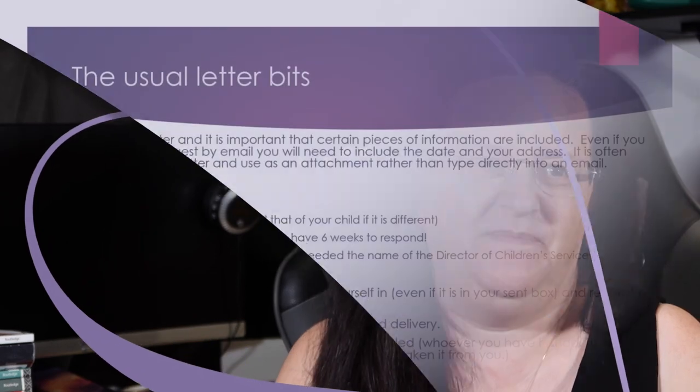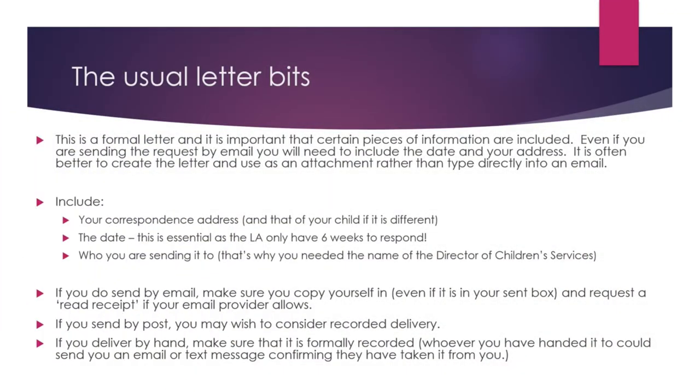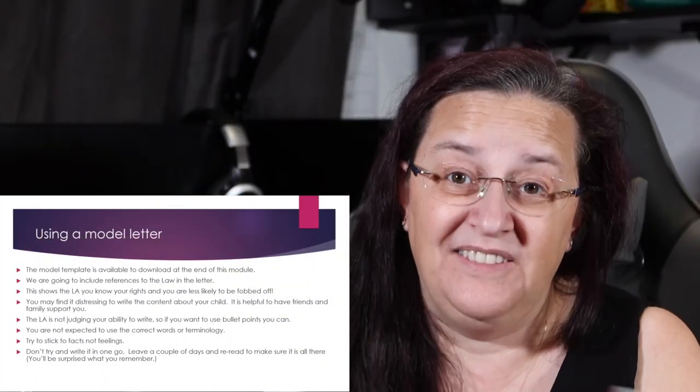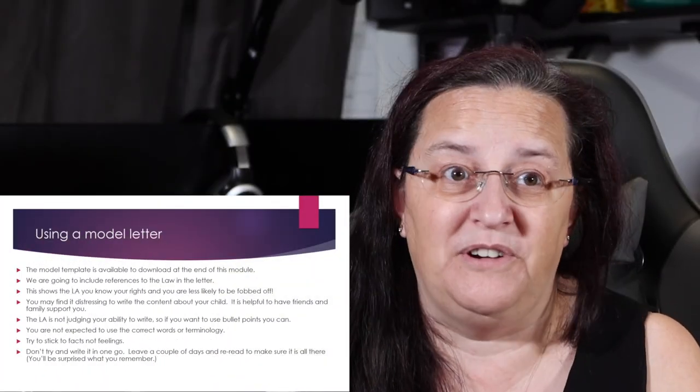When you come back to it and reread it, you'll realise you've missed something, or didn't explain it very well and now have a good example to add in. So if we're sending a letter, it's a formal letter and we need to include certain things — things like your correspondence address and that of the child, if it is different to that of the parental address. The local authority will have a record of that and they do need to check it, especially if they are in different local authorities.